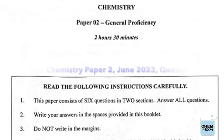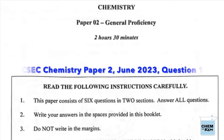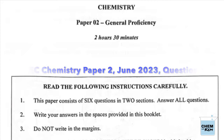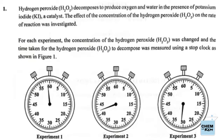This is the CXC CSEC Chemistry Paper 2 from May/June 2023. We're zooming in on Question 1 — bite-sized edition — giving you a breakdown of what the answer should be, what CXC accepts. Number one is your good old data analysis question. We're being asked not to spend more than 30 minutes on Question 1.